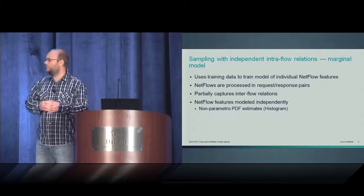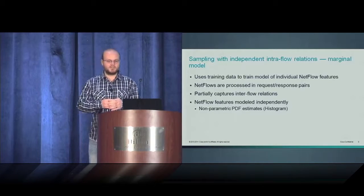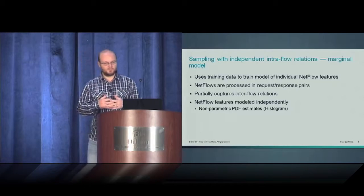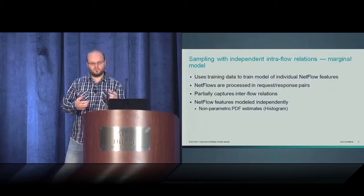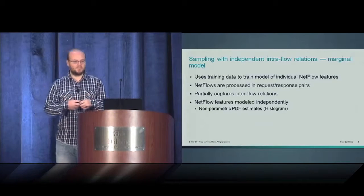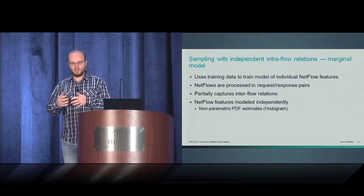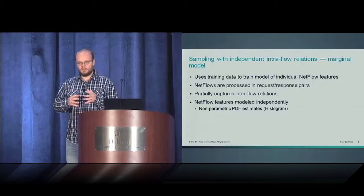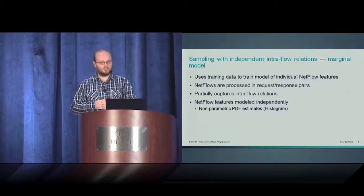Second approach, which is more reasonable and practical, is the sampling with independent intraflow relations. We call it the marginal model. It uses training data to train model of individual NetFlow features. The data are modeled in request-response pairs, so we first pre-process the data, find the request and corresponding response, and train the model on this pre-processed data. It is able to partially capture the interflow relations, for example the request-response ratio. But the individual features are trained independently by non-parametric PDF estimates.